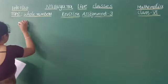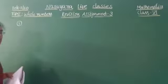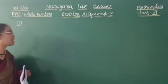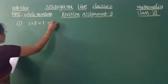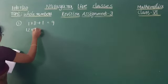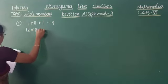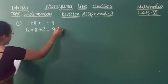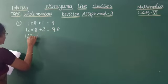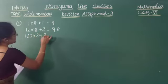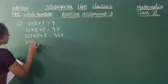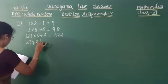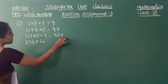The first question is: study the pattern and follow the steps. The pattern given is: 1 × 8 + 1 = 9; 12 × 8 + 2 = 98; 123 × 8 + 3 = 987; and 1234 × 8 + 4. So up to here they are given.